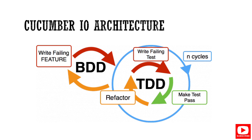BDD comes in during the refactor phase. During refactoring, we write a feature — writing a feature, making it fail, making it pass, then refactoring again. A feature is a collection of scenarios for one module — for example, the login module is one feature. Whatever scenarios cover the login module are grouped under that one feature. We write code that fails, make it pass, refactor, and add more features — this is how the BDD architecture works.